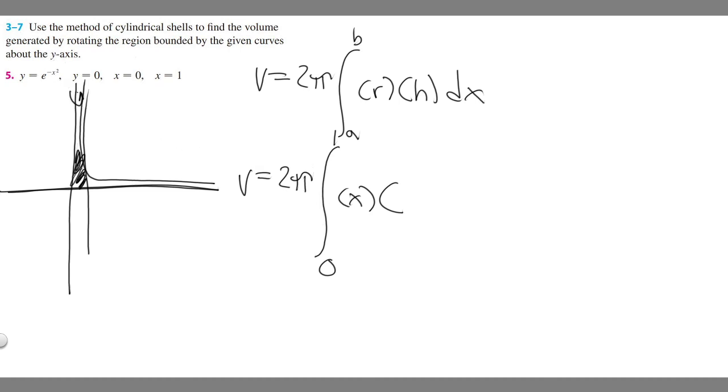So what you're going to want to do is just take your top curve e to the minus x squared, and then subtract it from your bottom one. In this case, it's zero. Subtracting zero doesn't really do anything, so it's just e to the minus x squared.